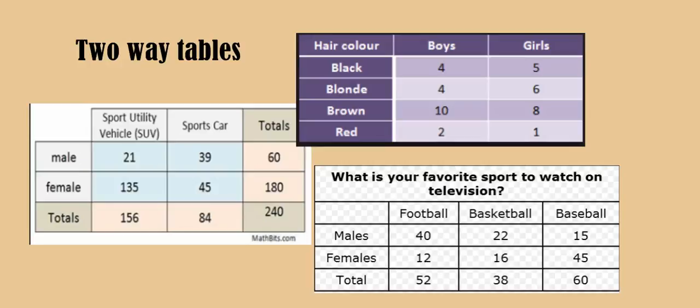This video will demonstrate how to complete, read, and interpret data that's been presented in a two-way table. Data represented in a two-way table is often gathered from a survey and it's usually categorical data — for example, answers to questions like 'what color is your hair,' 'what's your favorite color,' and 'what sort of pet do you have.'